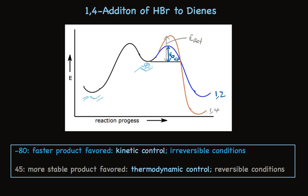So the conclusion, at minus 80 degrees, the faster product is favored, we have kinetic control, irreversible conditions. But at warmer temperatures, the more stable product is favored, because we have thermodynamic control under reversible conditions. 1,4 addition of HBr to dienes is a classic case of kinetic control versus thermodynamic control in its relationship to temperature.